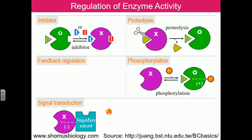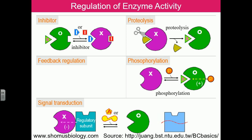Binding to the regulatory subunit influences the activity of enzymes associated with it. For example, an enzyme that is initially inactive can become activated once specific molecules such as cyclic AMP or calmodulin attach to the regulatory subunit. This allows the enzyme to diffuse and begin its function inside the cell.